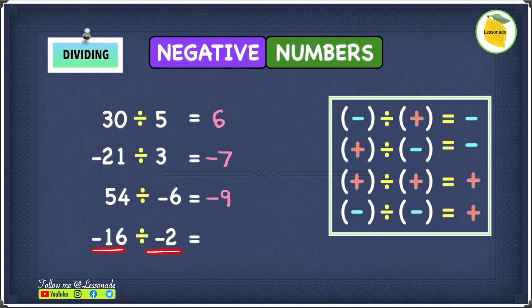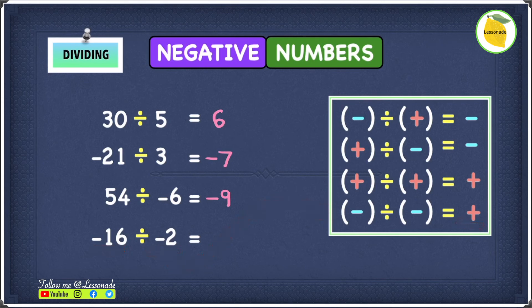In this example, we have two negative numbers. We know that both of these are with the same signs. Whenever you have two numbers that are negative, or both with the same sign, your answer will always be positive. So minus 16 divided by minus 2 will give you an answer of positive 8.